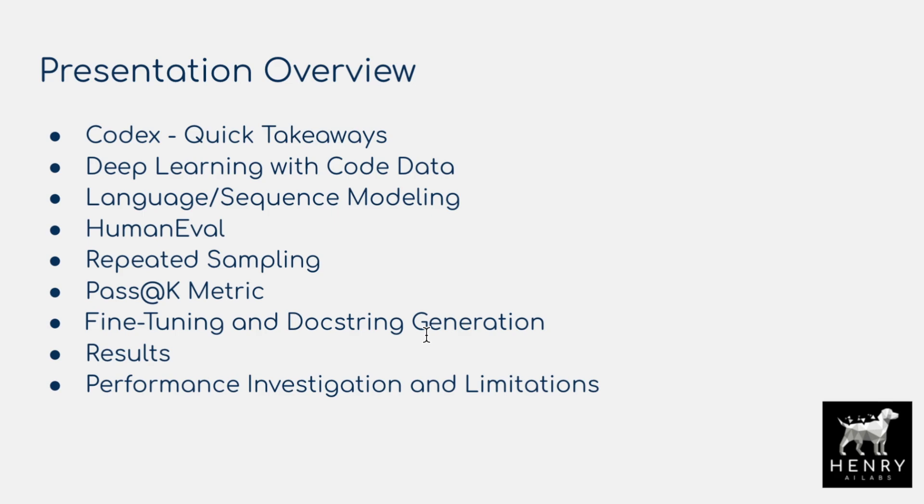They reformulate the docstring generation problem. Instead of going docstring → function signature → implementation, you go function signature → implementation → docstring. They rearrange the fine-tuning dataset like that so that the model can be used to write natural language explanations of code in that left-to-right autoregressive GPT style.